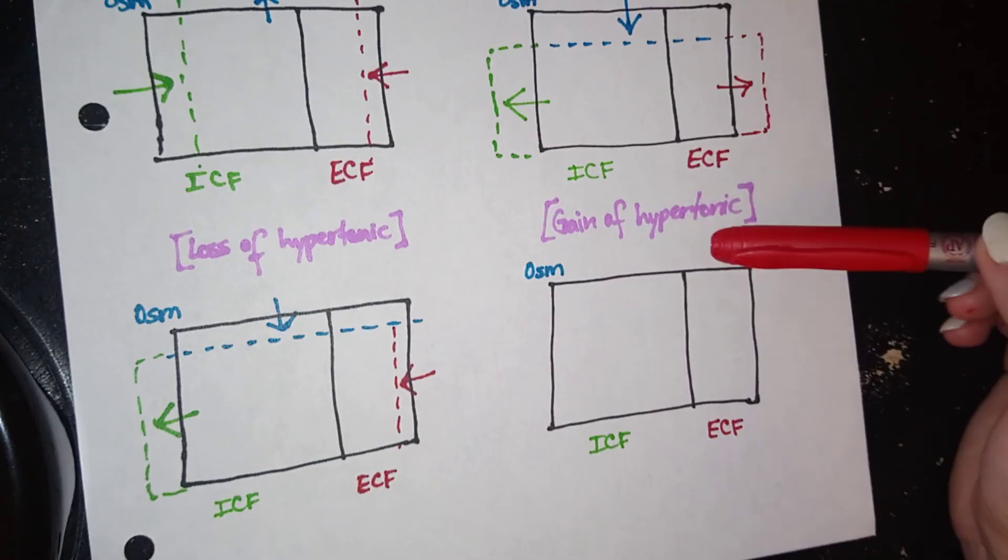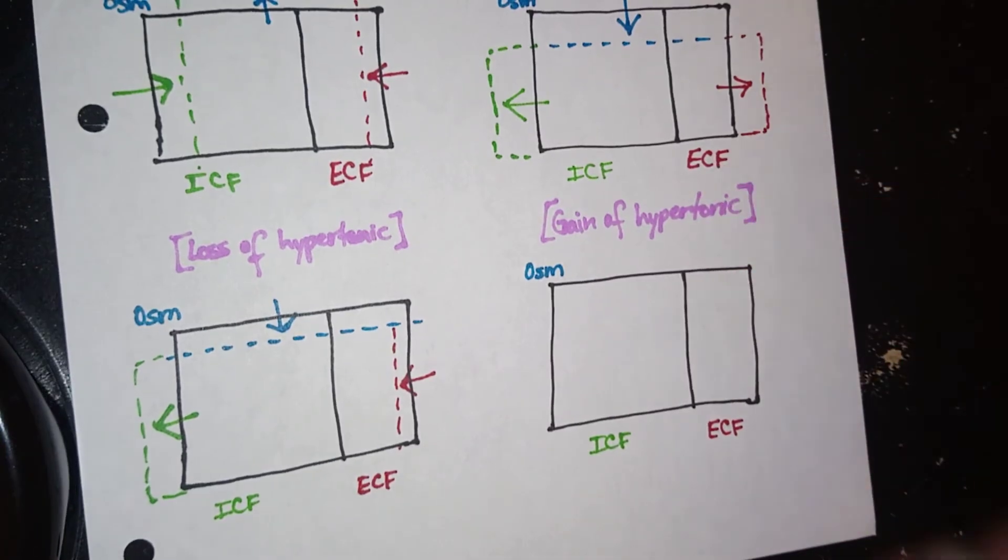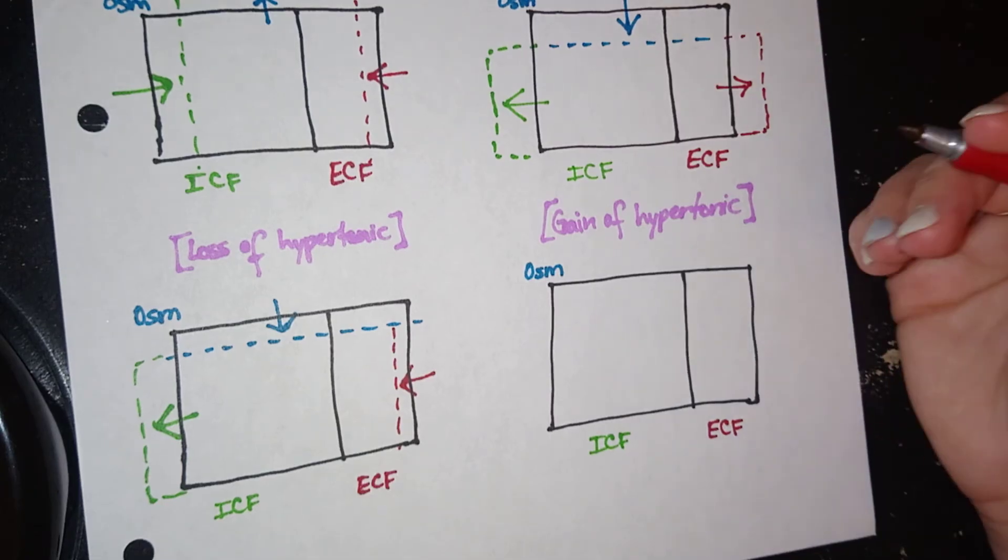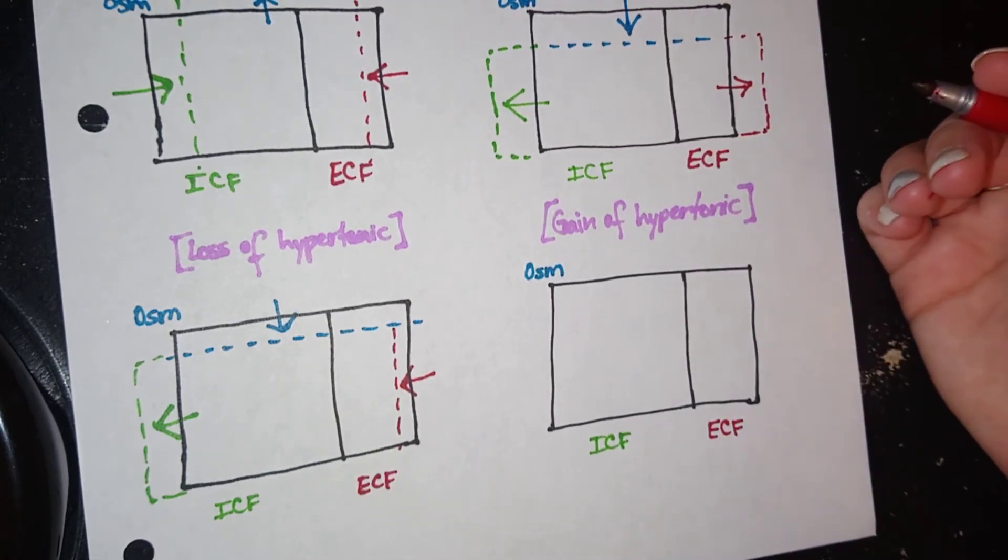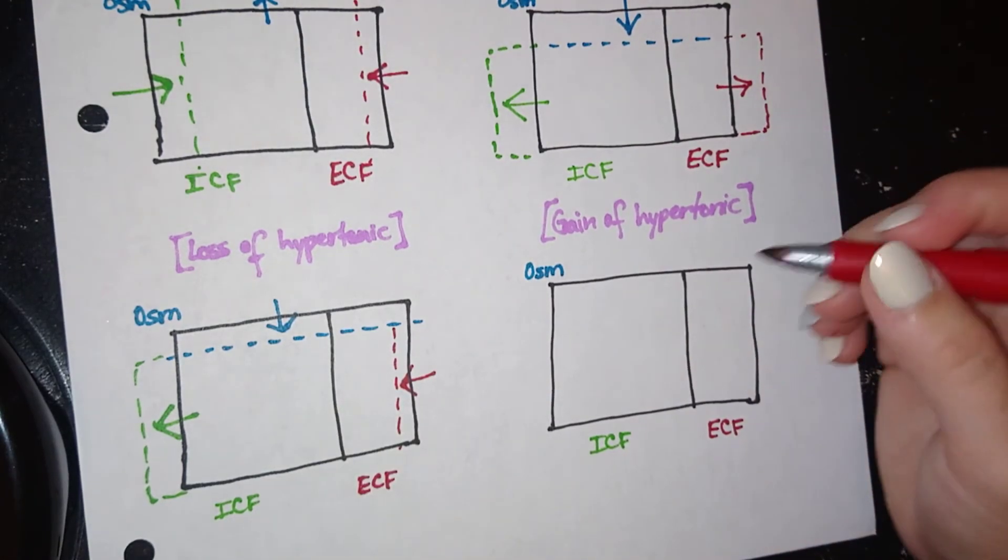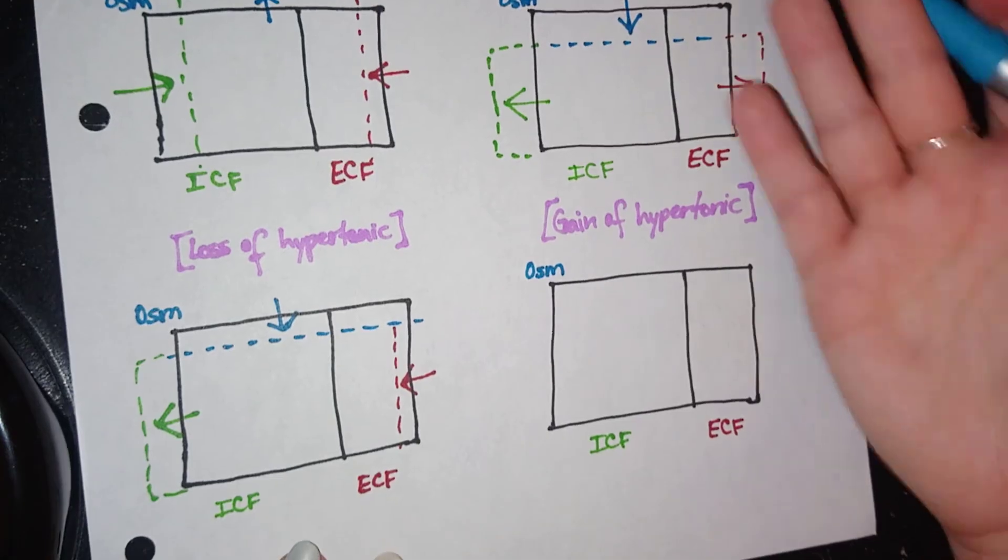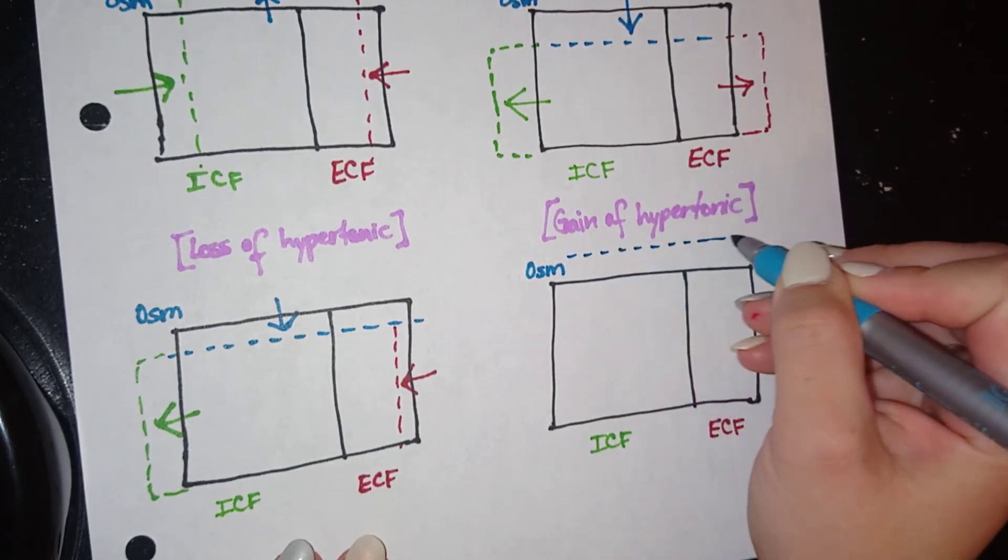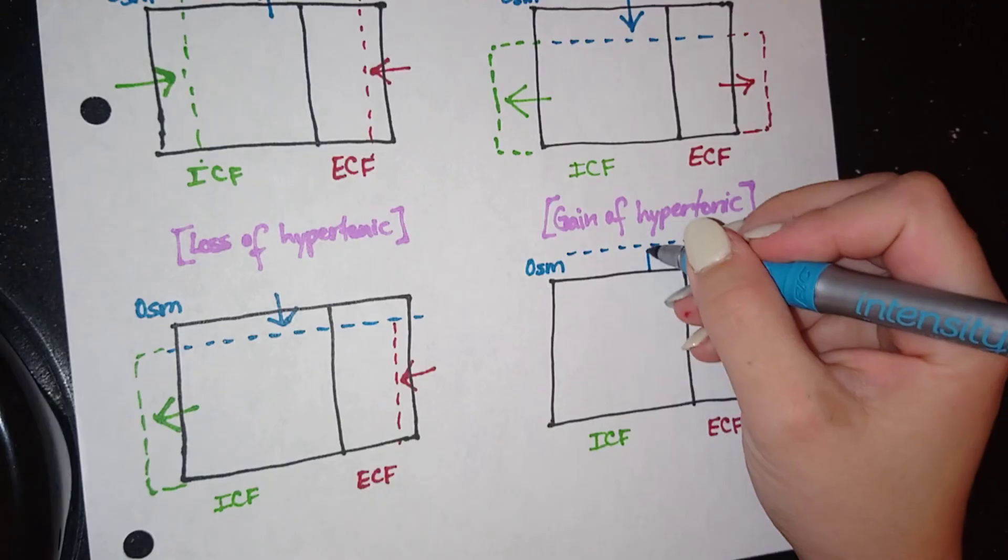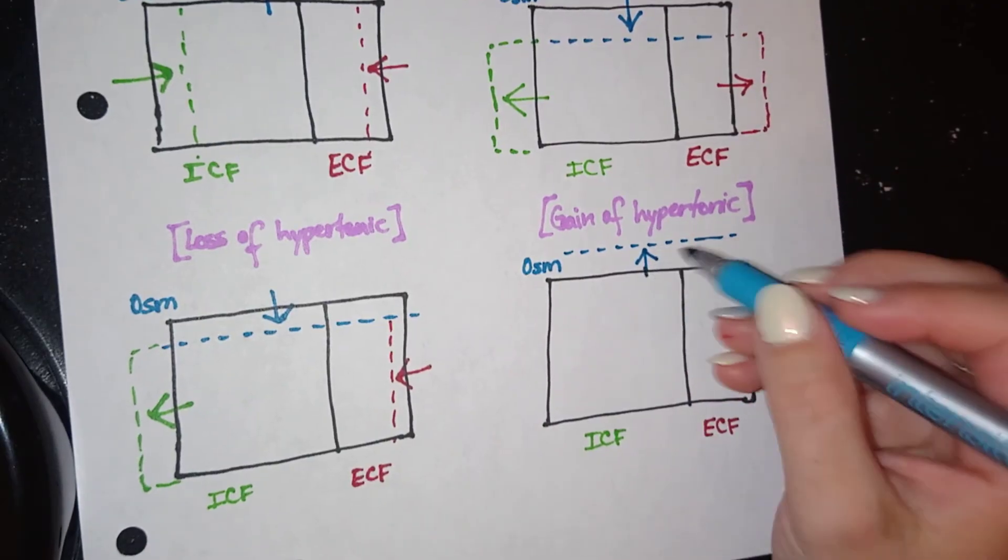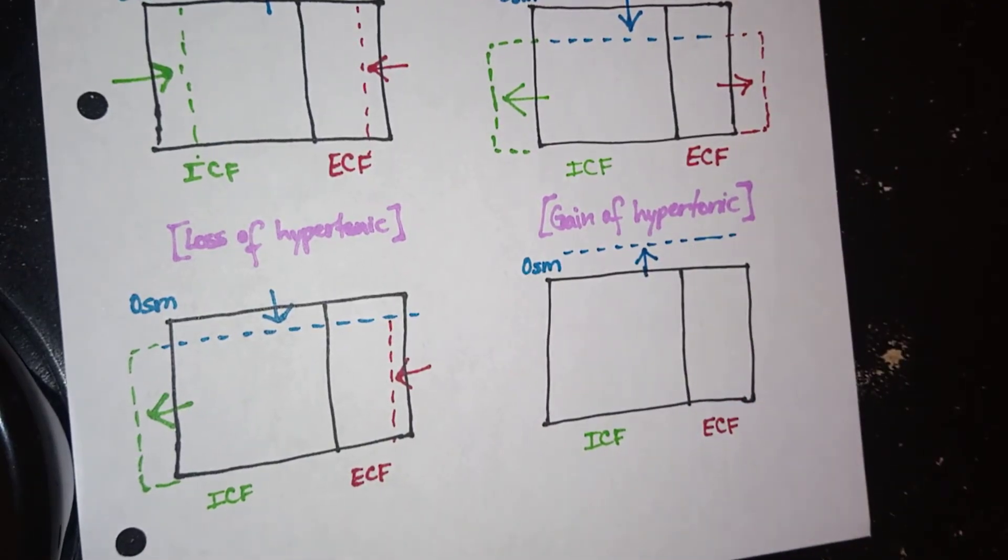So last but not least, we've got gain of mostly salt. And this would be, for example, due to SIADH. So what's going to happen is our osmolarity, since we're gaining salt, is automatically going to increase. Because we have so much salt now in our blood.